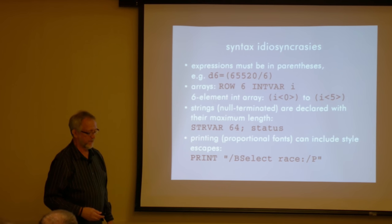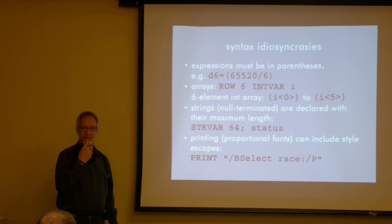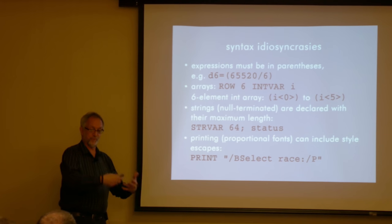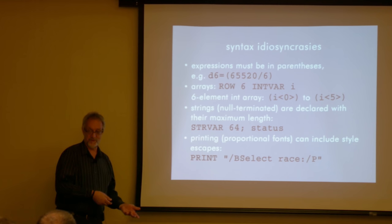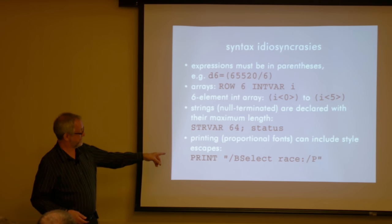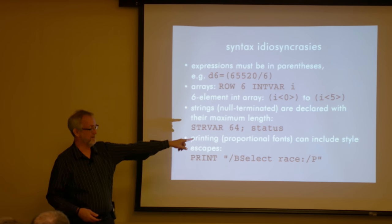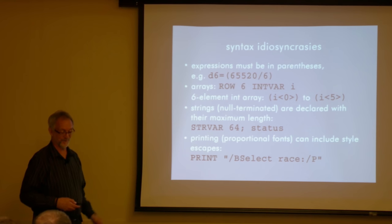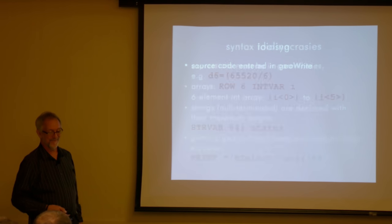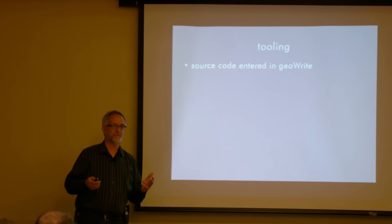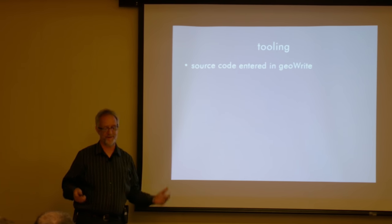I could not find anything like PRINT USING when I went through the manual, and I don't think it's there. But there is something really cool. If you think about Geos, when you're printing to the screen you're printing using a proportional font, and proportional fonts in Geos can be styled. So you can use this escape syntax — print boldface, select grace, back to plain text. That's my favorite one. The syntax is a little weird, but nothing that anybody who's written any code can't figure out.